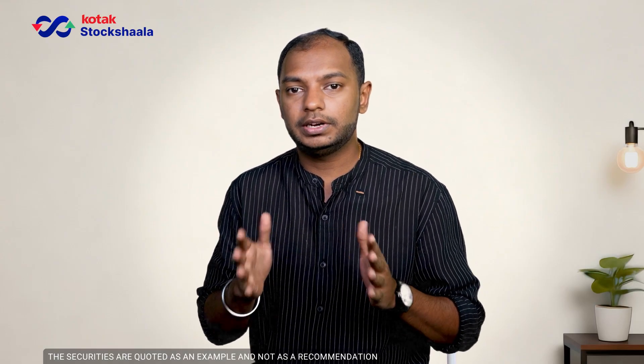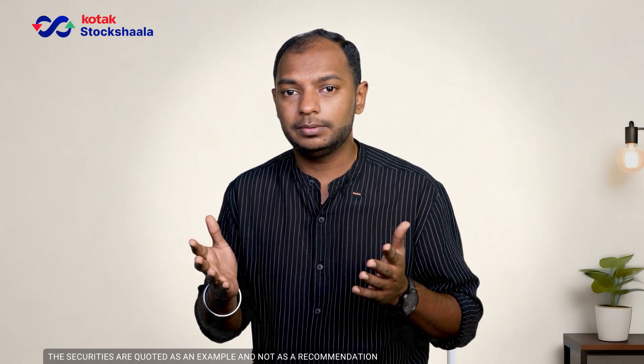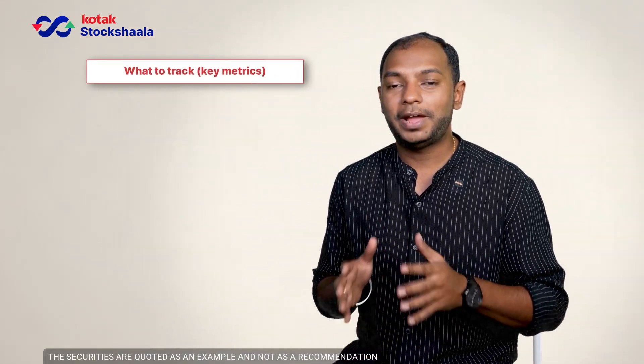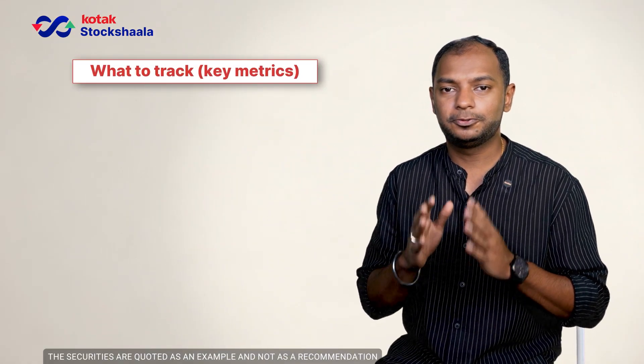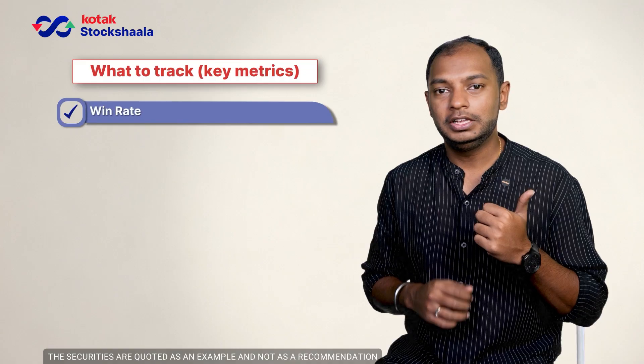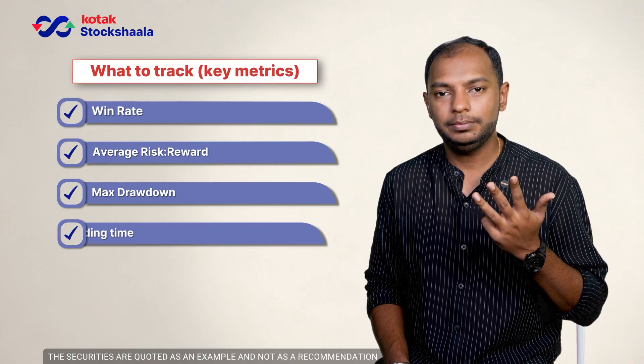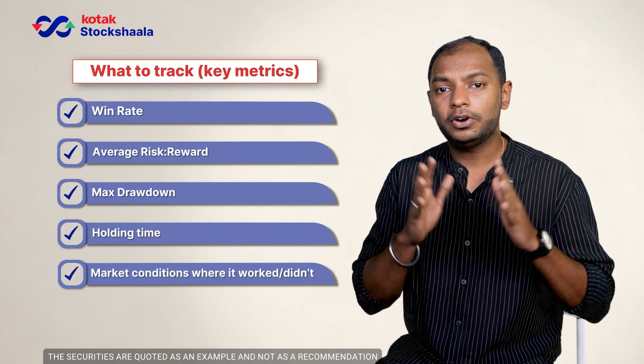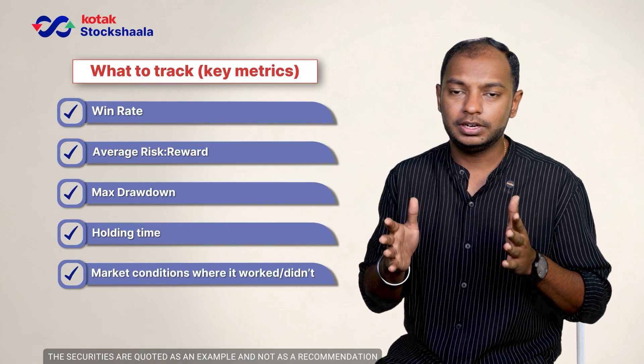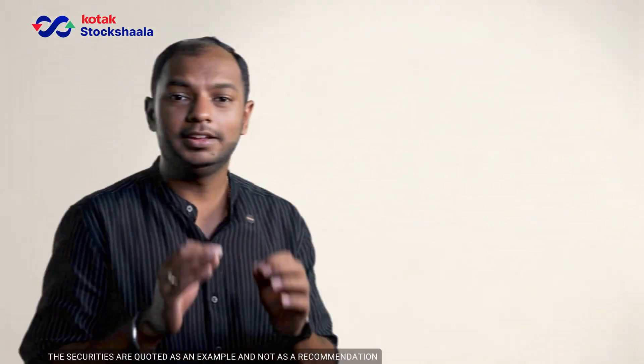Now you know how to backtest a specific instance, but doing just one instance is not sufficient — you have to do it for at least 50 to 100 trades. The next question is what metrics are you going to track. Your backtesting must help you track: your winning rate, your average risk-to-reward ratio, the maximum drawdown, your holding time, and in what market conditions the strategy worked and did not work.